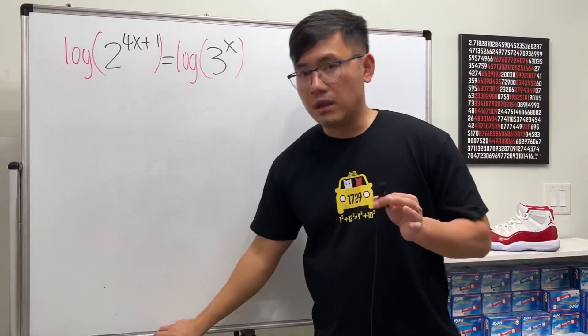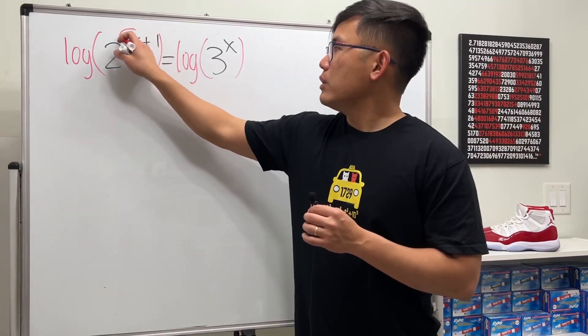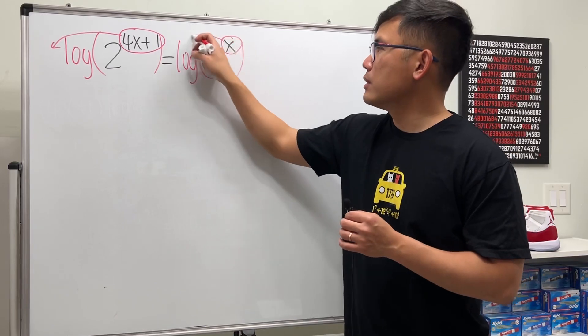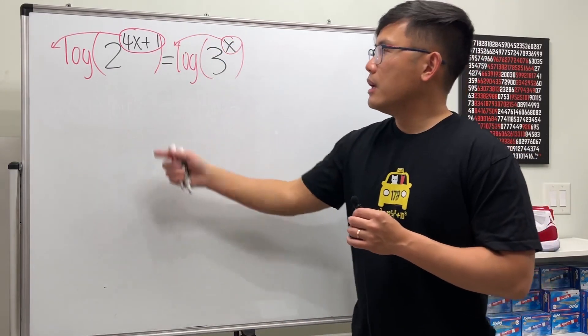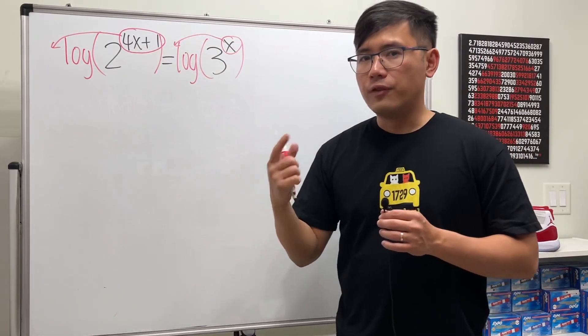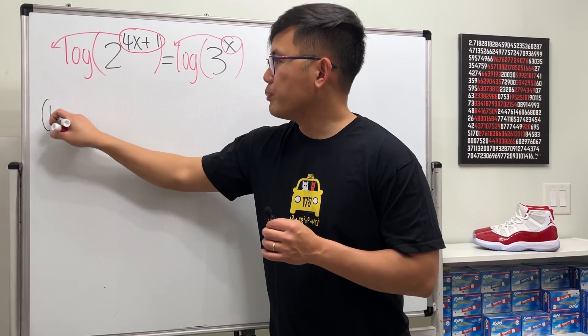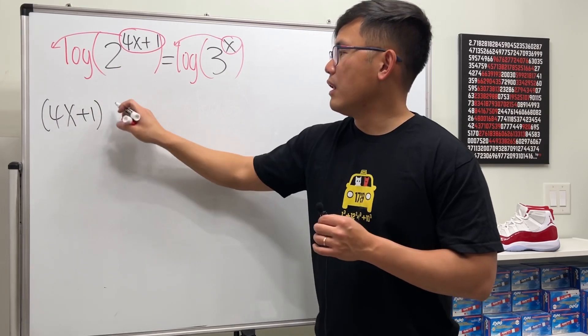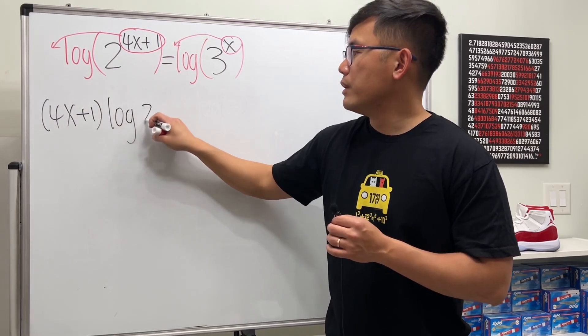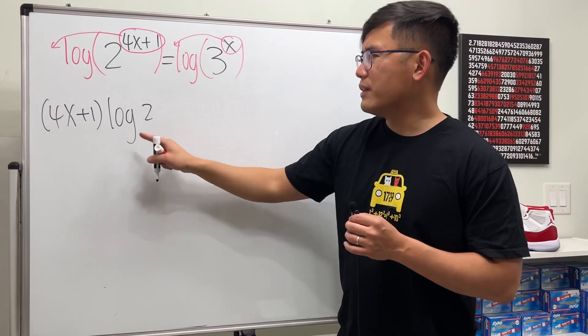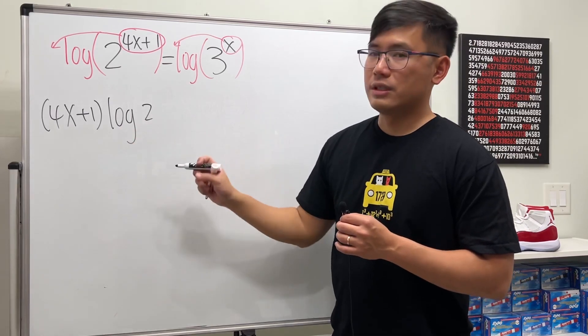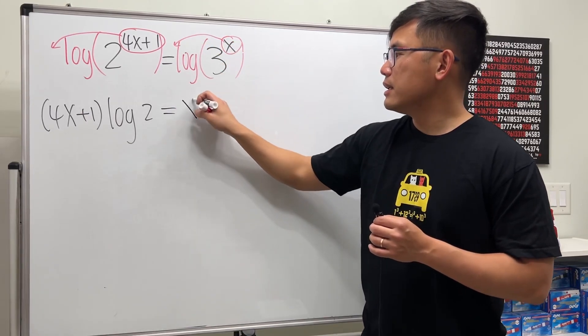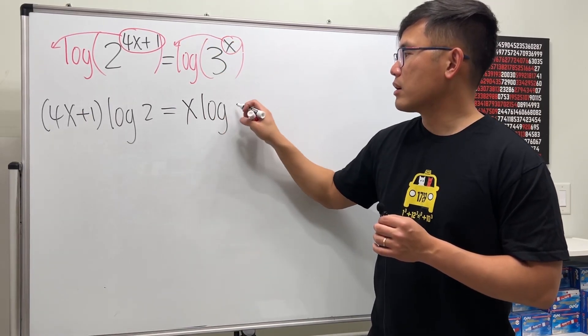Now, once we have the log on both sides, the beauty is that we can put the power to the front, here, and also do that here. Notice that this right here has two terms, 4x plus 1. So when you put that at the front, make sure you put the parentheses, 4x plus 1, and then we have log of 2. And this right here, I just want to emphasize that it's 2 instead of a logarithm. Keep that in mind. And then this is equal to x at the front, and we multiply that by log of 3.